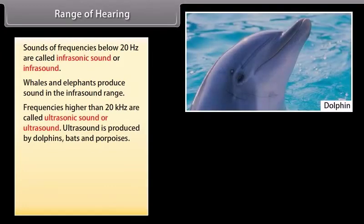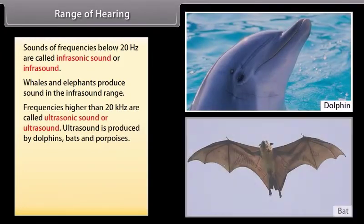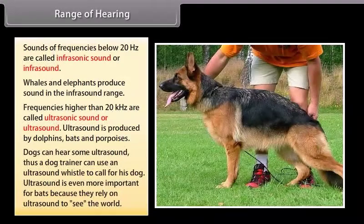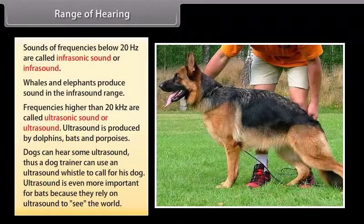Frequencies higher than 20 kilohertz are called ultrasonic sound or ultrasound. Dogs can hear some ultrasound. Thus a dog trainer can use an ultrasound whistle to call his dog. Ultrasound is even more important for bats because they rely on ultrasound to see the world.